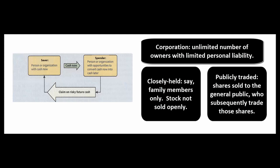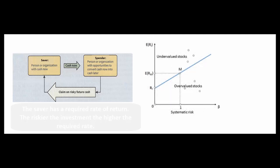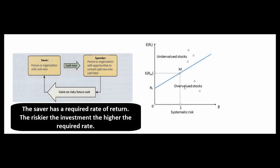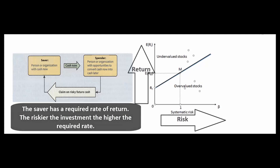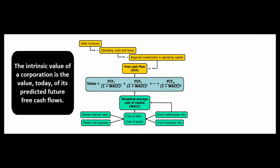The publicly traded corporation is the one we look at in finance — where shares are traded on the open market so the owners could be anybody. Why does the saver give their money to the spender? Because the spender will invest that money and generate a return. The higher the risk, the higher the required return before a saver will take that bigger risk.